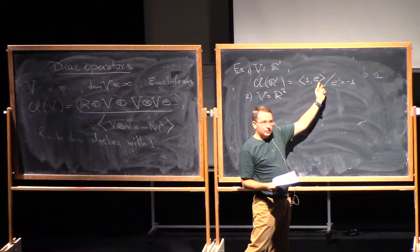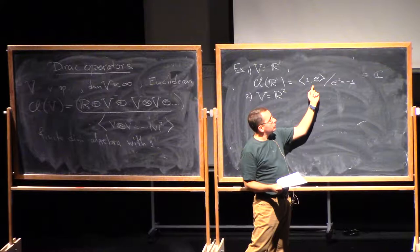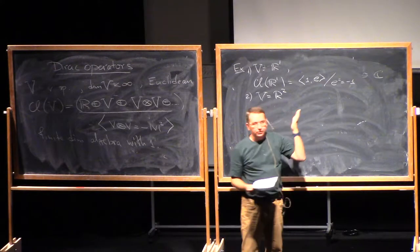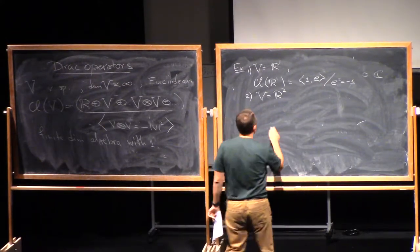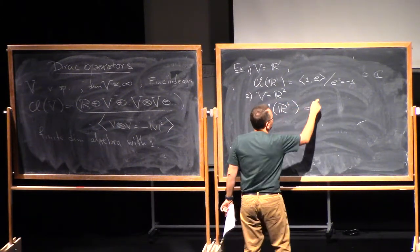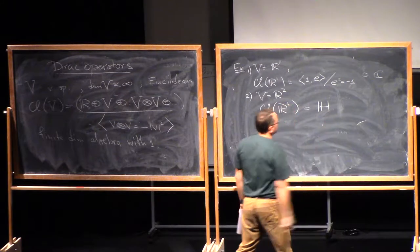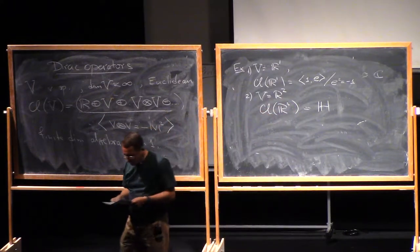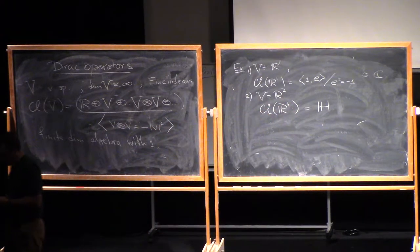But you will have also the set one, which is a product of E1 and E2. So all in all, you will have three generators. And what this gives you is the algebra of quaternions. So again, this is something that we know very well.